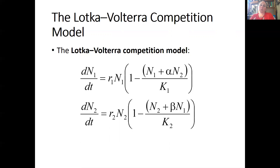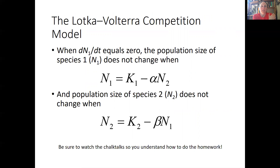The chalk talk videos go into a lot more detail, so please watch those — the last one also includes hints for getting through some of the homework questions. In the Lotka-Volterra competition models, if you set dN/dt equal to zero and solve for equilibrium, you can predict population sizes and figure out how populations might change as the carrying capacities, alpha, or beta change.